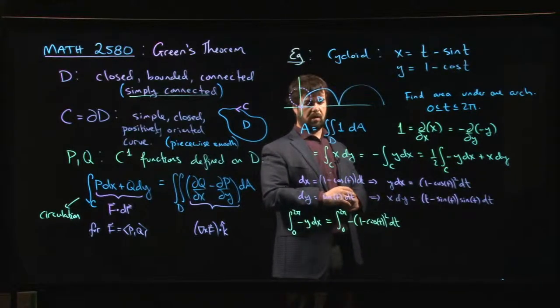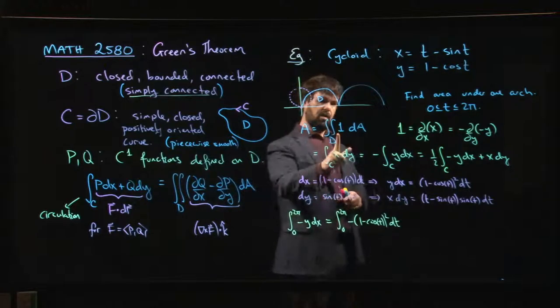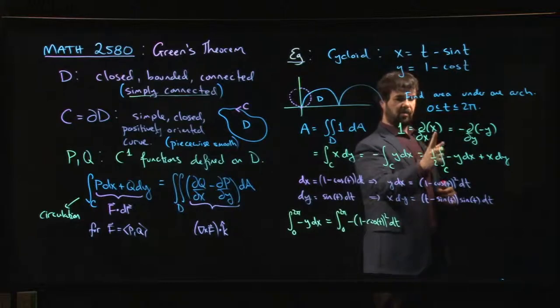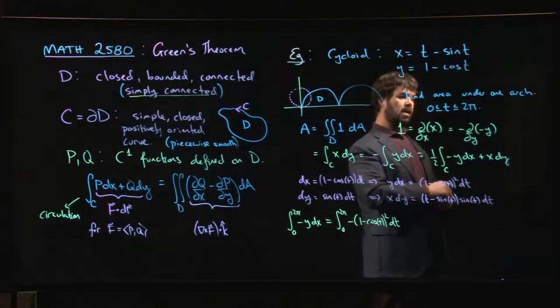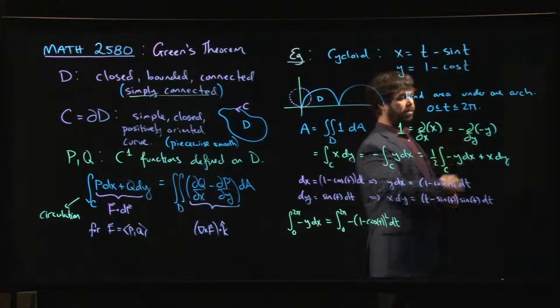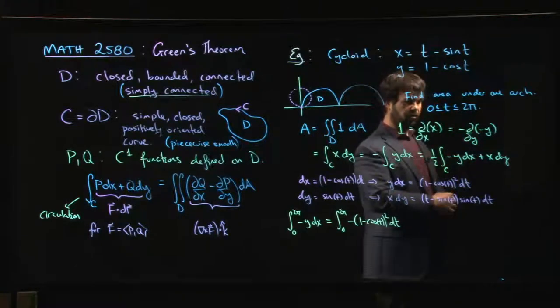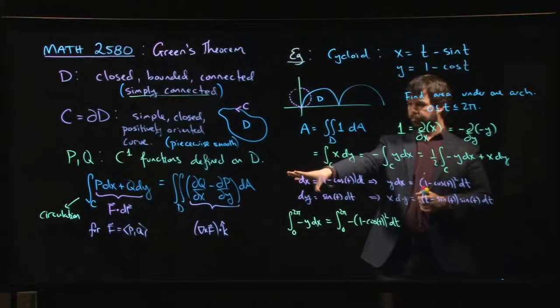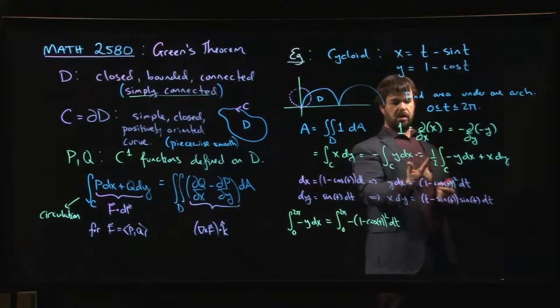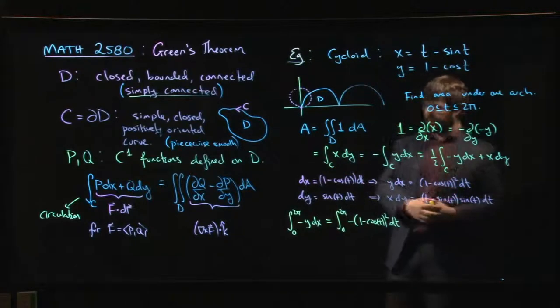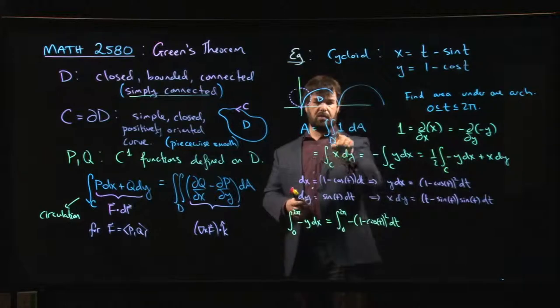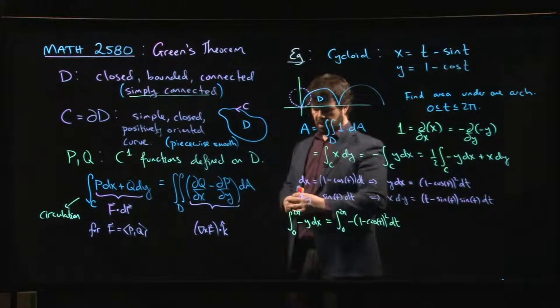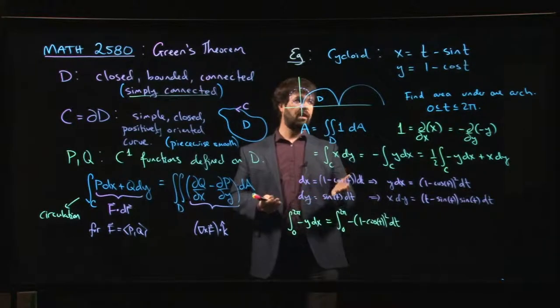So then we think about, okay, I have Green's theorem. What are some ways that I can write 1? Well, 1 is the x derivative of x, it's the y derivative of y, so it's negative the y derivative of minus y. With those observations you can plug things into Green's theorem and get one of three choices for a line integral that is equivalent to the area you were interested in.